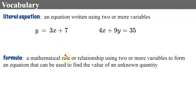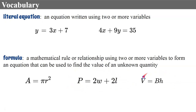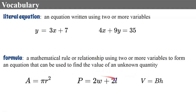A formula, by definition, is a mathematical rule or relationship using two or more variables to form an equation that can be used to find the value of an unknown quantity. So you're familiar with the area of a circle, perimeter of a rectangle, and also volume of a three-dimensional object. These are relationships — if we know the radius of a circle, we can find the area. There's a relationship between the area relative to its radius. Same goes for perimeter: there's a relationship with the perimeter given the width and length of a rectangle. And of course with volume, the area of the base, the height, and the volume all come into play.